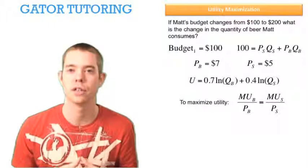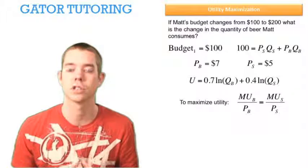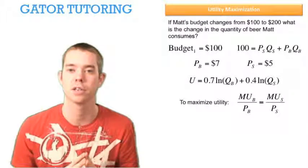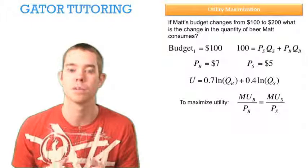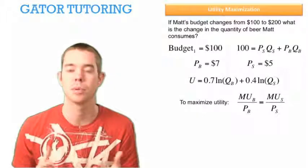So to maximize utility, we know we're going to use the optimization condition, which says the marginal utility of beer divided by the price of beer must be set equal to the marginal utility of sandwiches divided by the price of sandwiches in order for us to be maximizing utility.